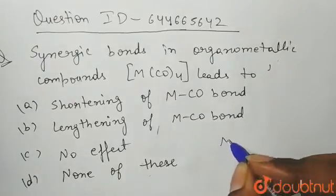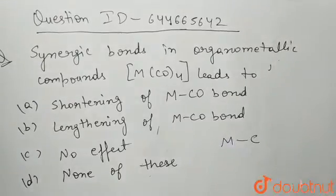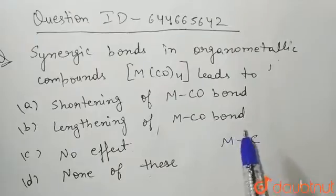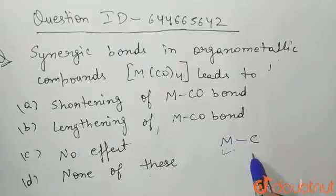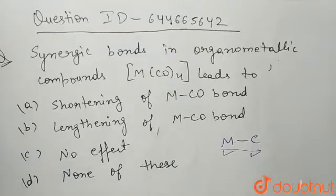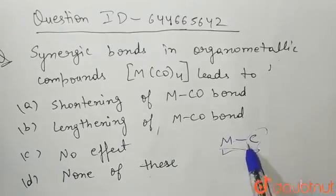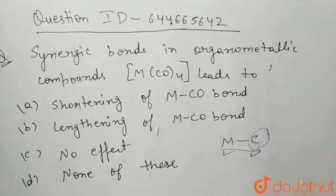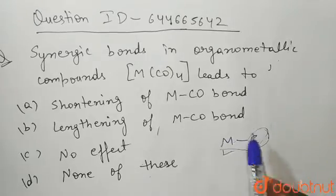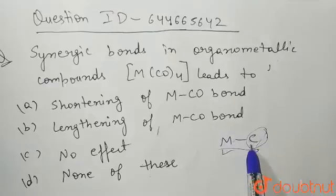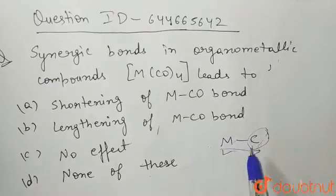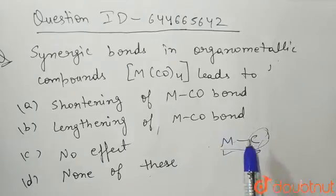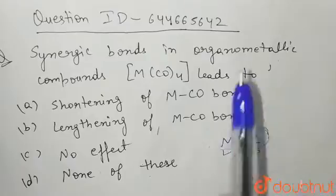First of all, we should know what organometallic compounds are. Organometallic compounds are compounds in which a metal and a carbon have a bond. 'Organo' means carbon — organic means carbon-related compounds — and 'metallic' means metal. So a bond between metal and carbon — those compounds where metal and carbon have a bond — are known as organometallic compounds.